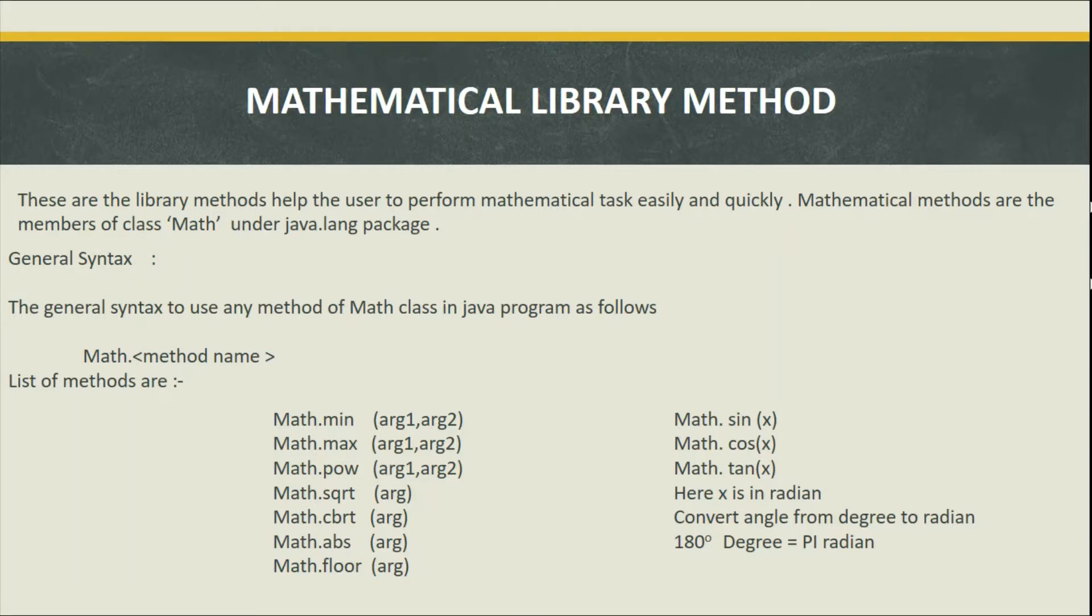Now we have a list of methods by which we can perform different tasks. These are min, max, pow, and sqrt.